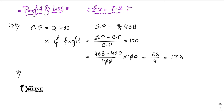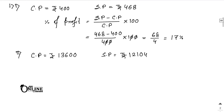Sum number two: CP equals 1360 and SP equals 1210.4. Since CP is greater than SP, that means there is a loss. The percentage of loss formula is: CP minus SP — note that for profit it's SP minus CP, but for loss it's CP minus SP — and the denominator is always CP, multiplied by 100.